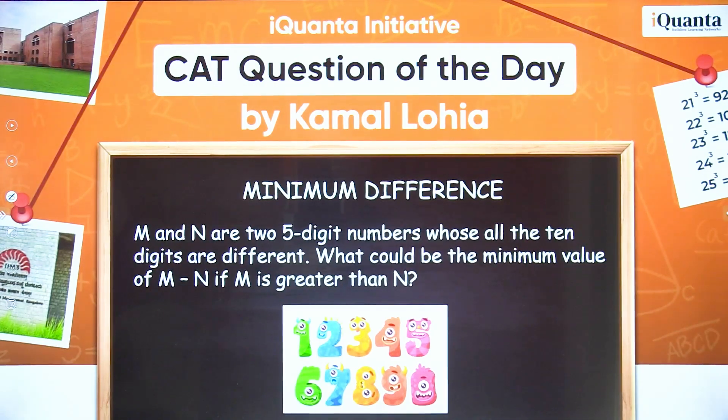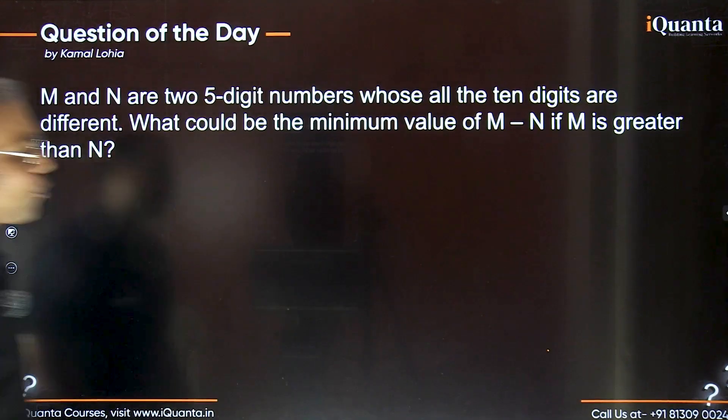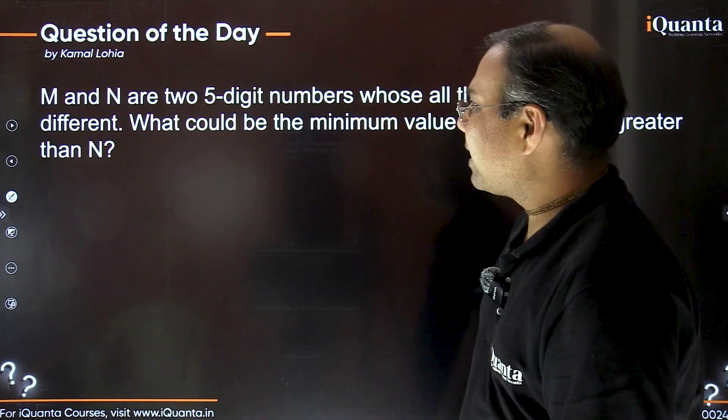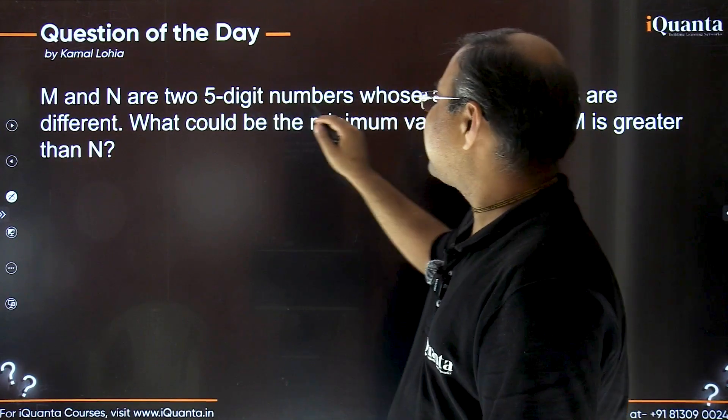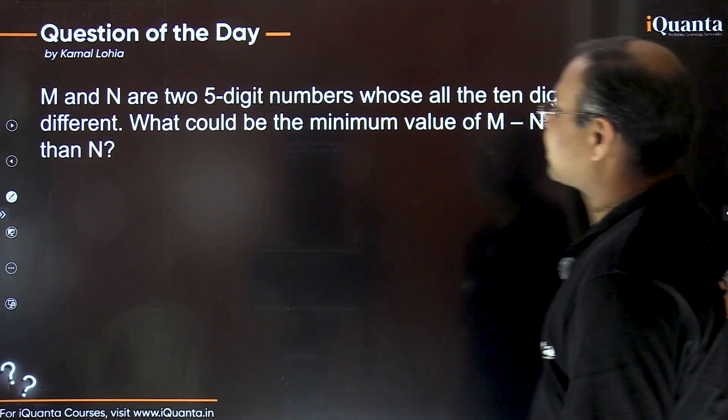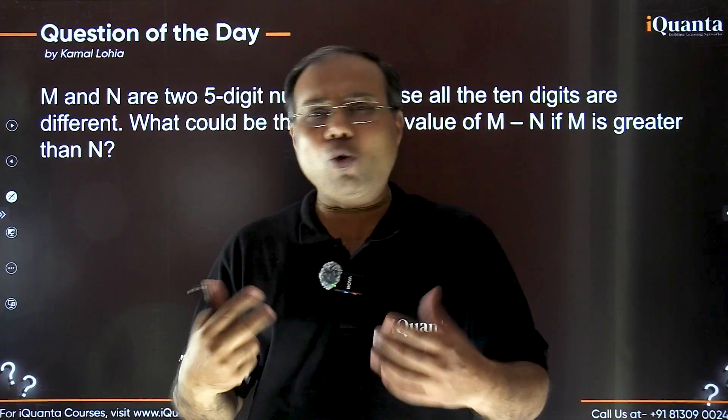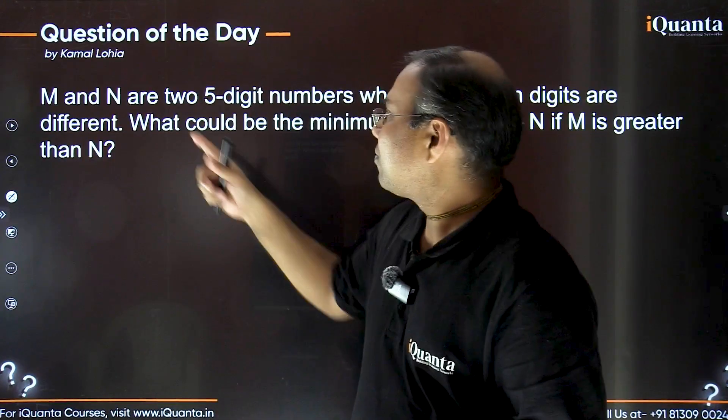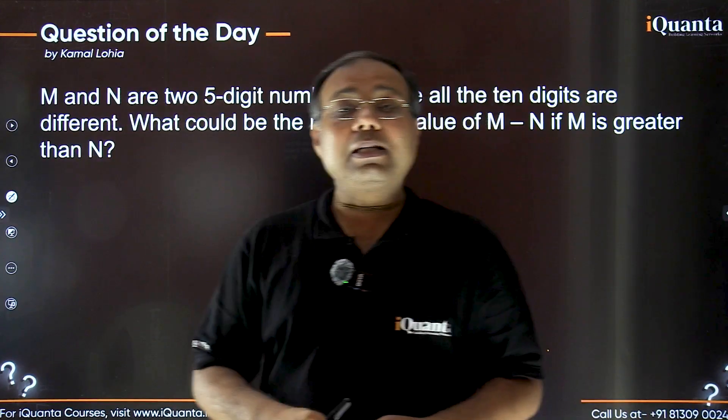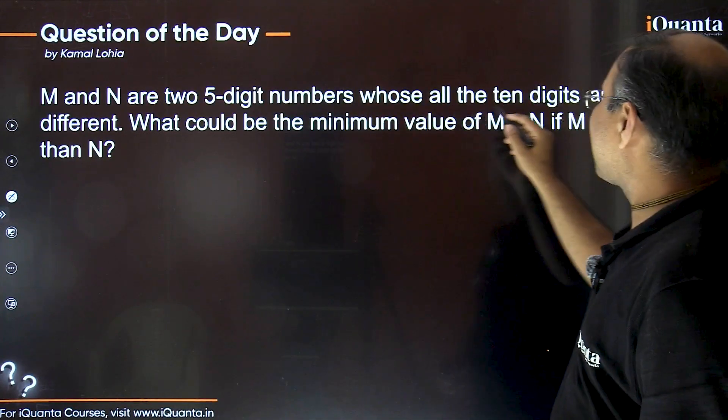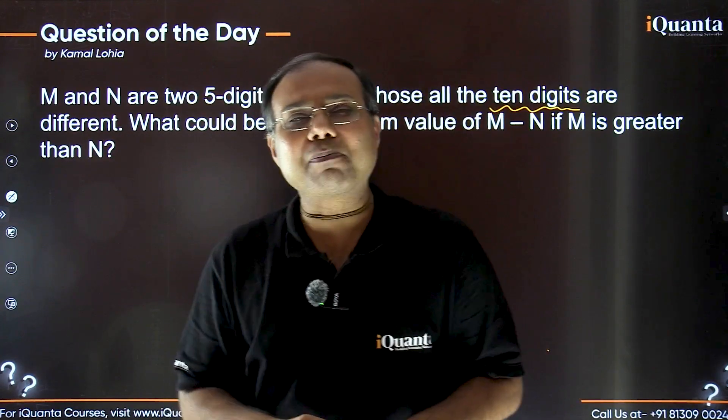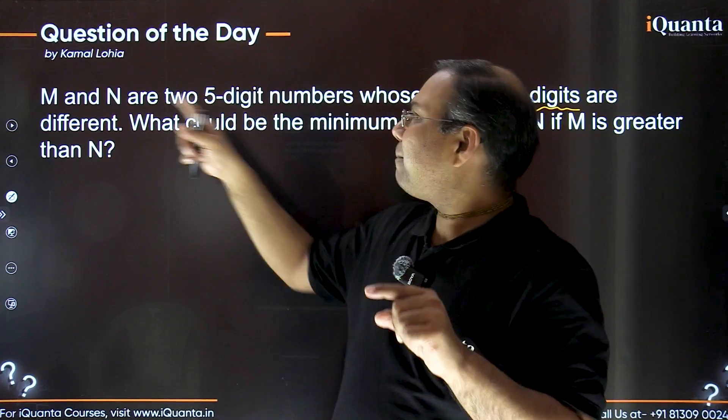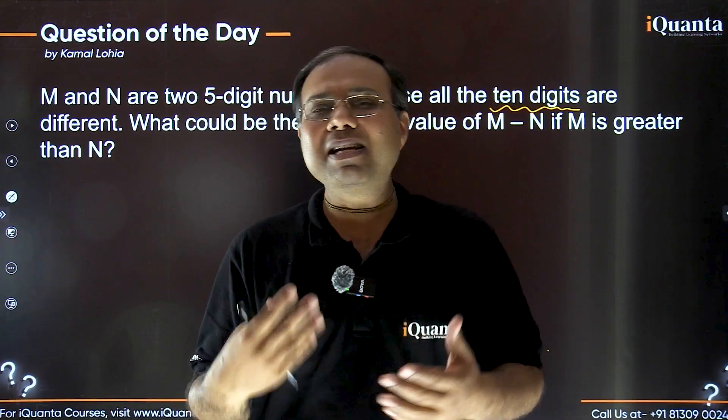This will be really very helpful for preparation of your upcoming exams and even for mathematics in general. Here is the first question before you and I am sure you may have solved it already. So now we will discuss how to solve it in great detail. The question says M and N are two five-digit numbers whose all the ten digits are different.